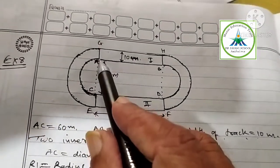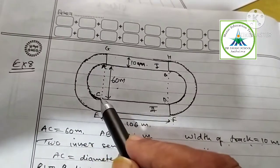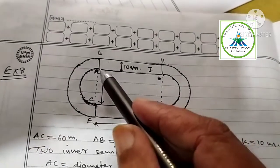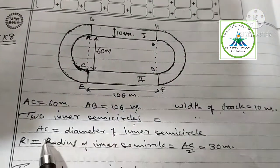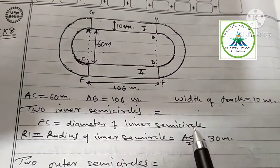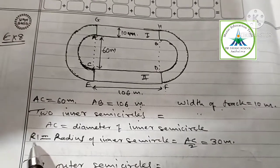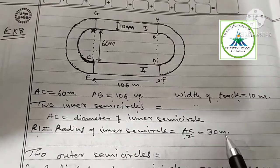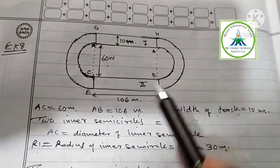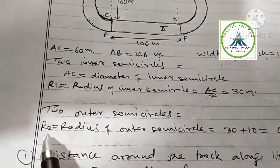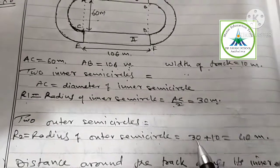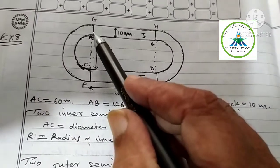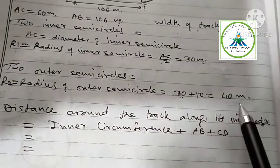There are two inner semicircles. AC becomes diameter of inner semicircle. Therefore, R1 equal to radius of inner semicircle equal to half of AC, 30 meter. Similarly, there are two outer semicircles. Let us take radius R2. Radius of outer semicircle equal to 30 - inner semicircle radius - plus 10 width, equal to 40 meter. R1, R2 is important. If you understand this, you will get answer very easily.